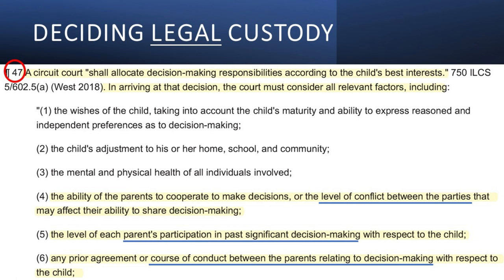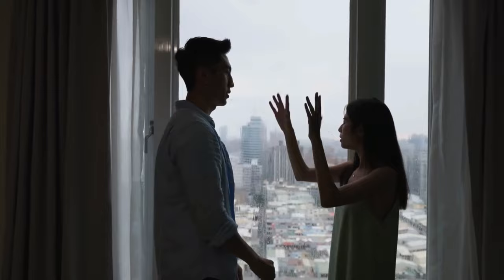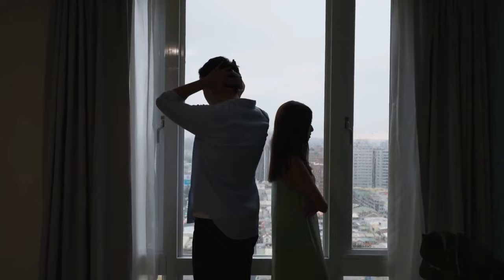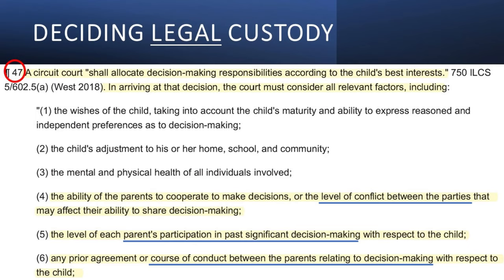For legal custody and decision-making, the appellate court says in paragraph 47 that a circuit court shall allocate decision-making responsibilities according to the child's best interests. The court must consider all relevant factors, including — they list 15 factors. Three of them are: Number four, the ability of the parents to cooperate to make decisions or the level of conflict between the parents. Five, the level of each parent's participation in past significant decision-making with respect to the child. Six, any prior agreement or course of conduct between the parties relating to decision-making with respect to the child.